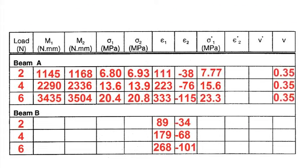V and V star are Poisson's ratio calculated theoretically and experimentally. The theoretical Poisson's ratio for aluminum is taken from literature as 0.35.